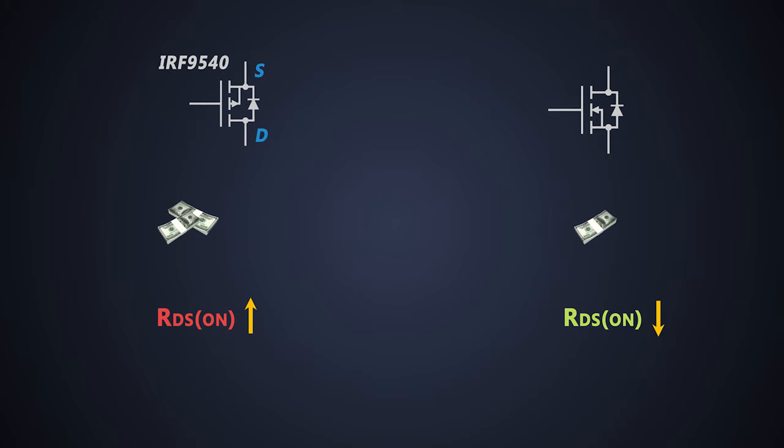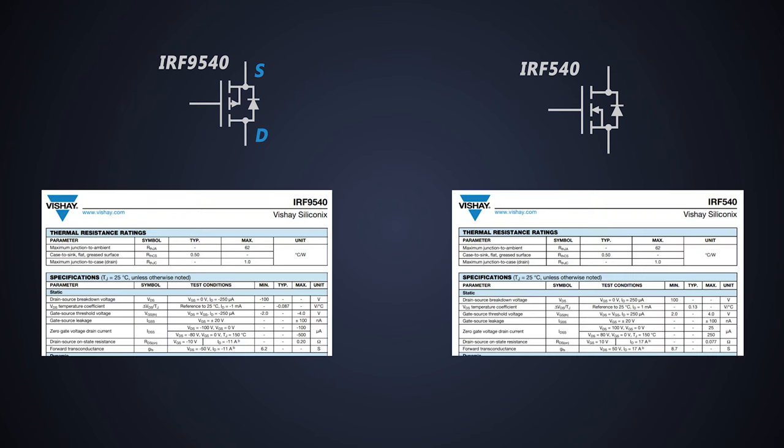For example, if we take IRF-9540 P channel MOSFET and IRF-540 N channel MOSFET, the VDS of both MOSFETs is around same, that is 100V. But the RDS ON of P channel MOSFET is around 200mΩ. And RDS ON of the IRF-540 is only 77mΩ.